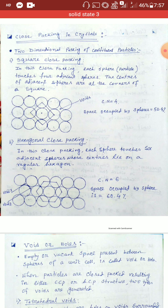Today I will discuss closed packing in crystals, starting with close packing in two dimensions. Two-dimensional packing means the arrangement of constituent particles along two directions — the x and y axes. There are two types of two-dimensional close packing.